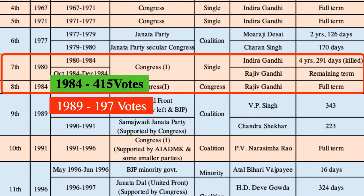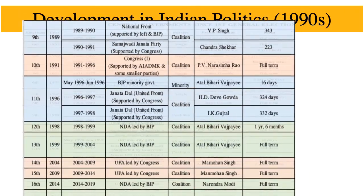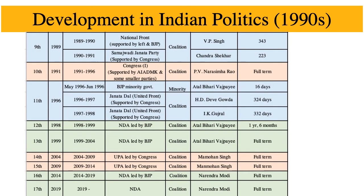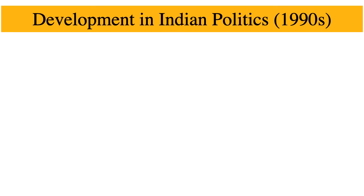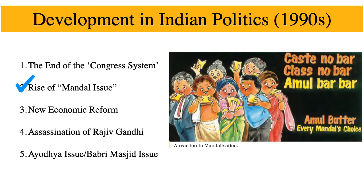Since 1989, Congress could never win an absolute majority again. In fact, since 1989, all governments have been coalition governments, which is why we term 1989 as the beginning of the coalition era.